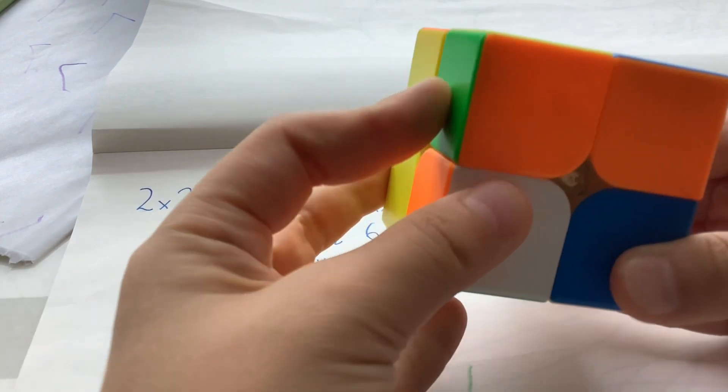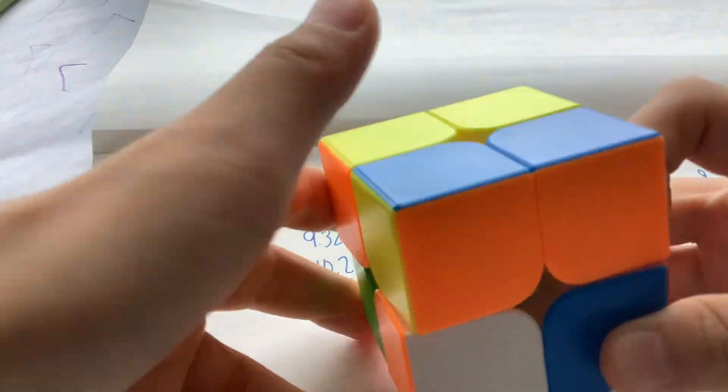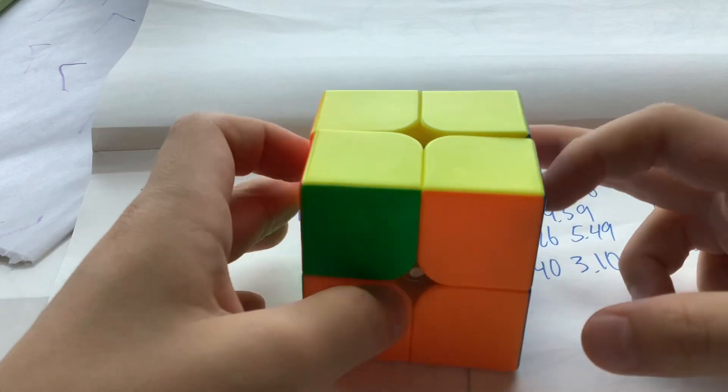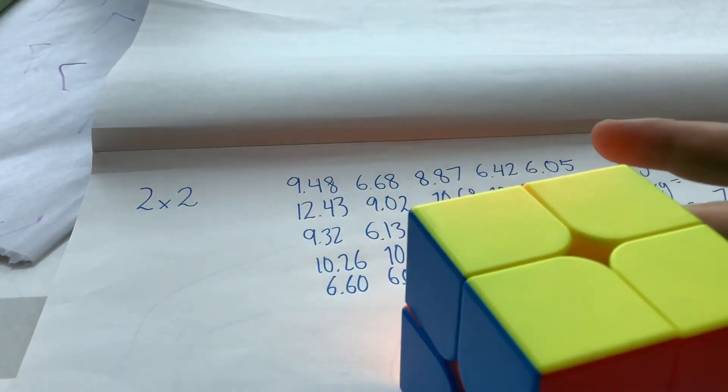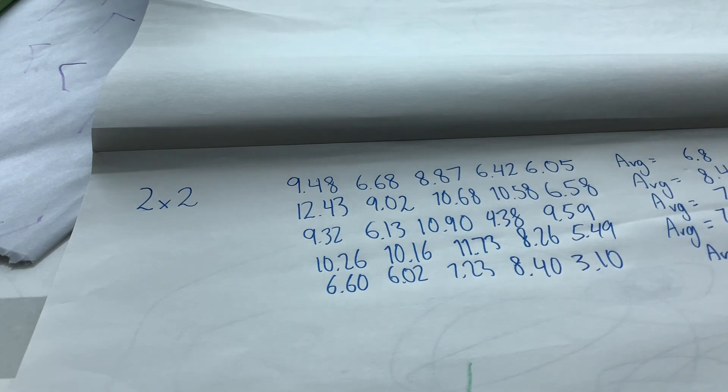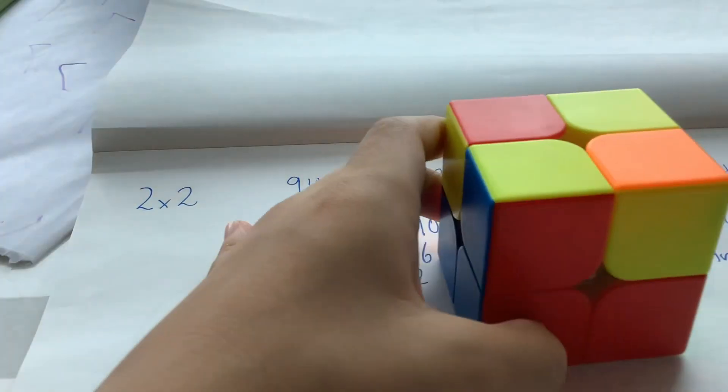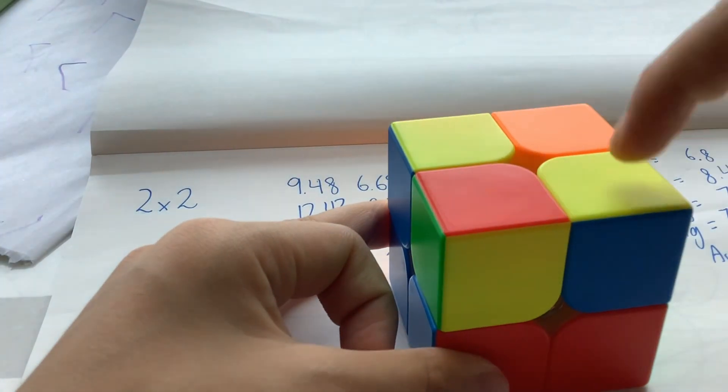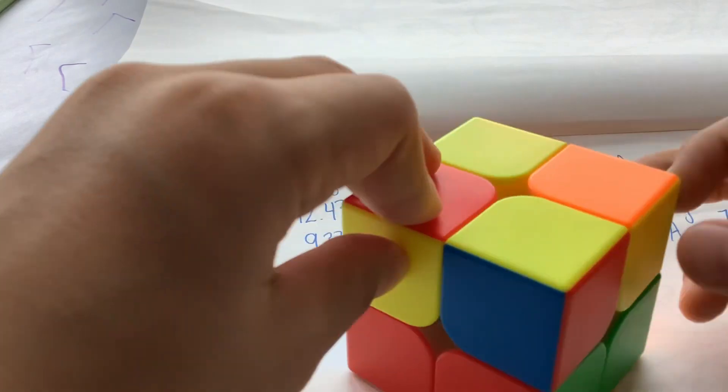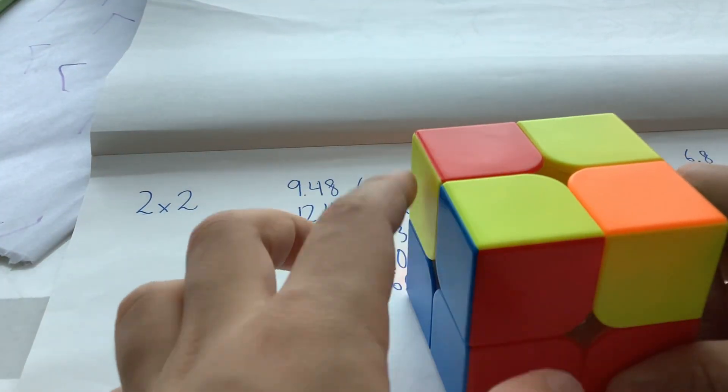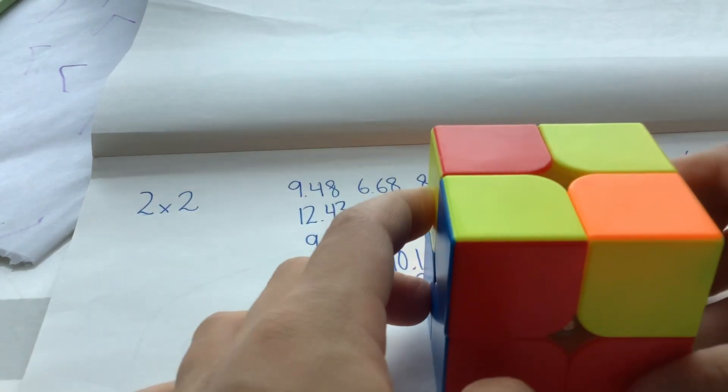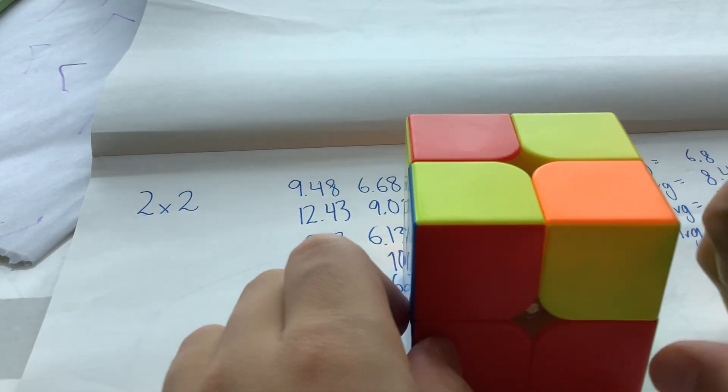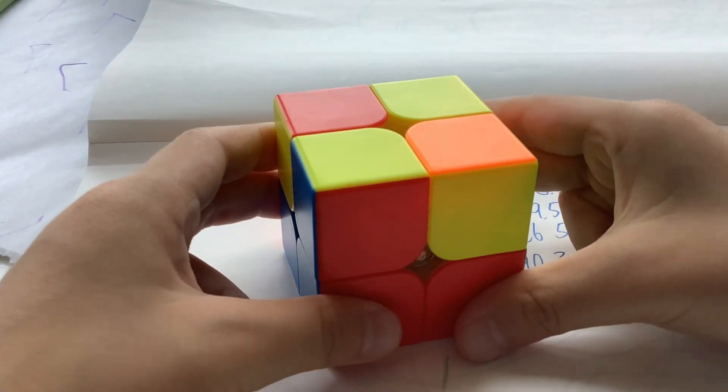Then do an anti-Sune, which is this. And if you have these two and these are here, just put this on the left one here so the one facing you is on the right, and then you do this.